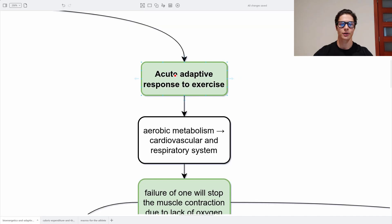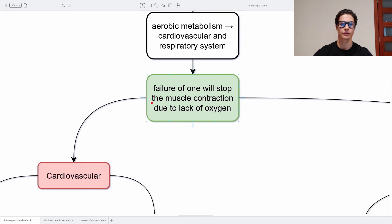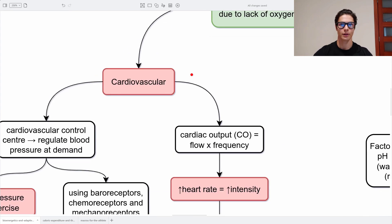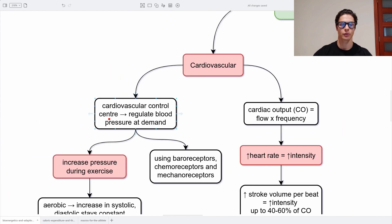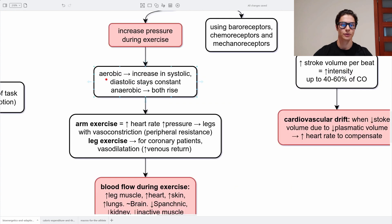Now we have the acute adaptive response to exercise, primarily aerobic metabolism. This involves the cardiovascular and respiratory systems together, and the failure of one will stop muscle contraction due to lack of oxygen. The cardiovascular control center regulates blood pressure on demand using baroreceptors, chemoreceptors, and mechanoreceptors. During exercise, blood pressure increases to provide blood and oxygen to the tissues. During aerobic exercise, systolic pressure increases but diastolic stays constant — systolic being the ejection of blood from the heart and diastolic being the filling. During anaerobic exercise, both rise.